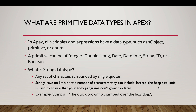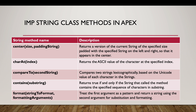Starting with the basics — what are primitive data types in Apex? In Apex, all the variables and expressions we define have a data type, just like all other languages, such as sObject type, primitive data type, or enum. A primitive data type can be of an integer, double, long, date, datetime, string, boolean, etc. In Apex, any set of characters surrounded by single quotes is called a string. Strings have no limit on the number of characters they can include; instead, the heap size limit is used to ensure your Apex programs don't grow too large. Here is an example of how to define a string in Apex.